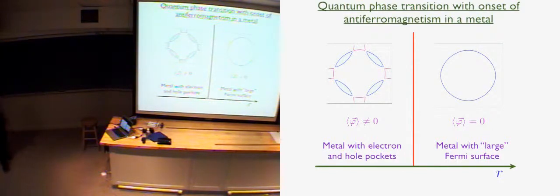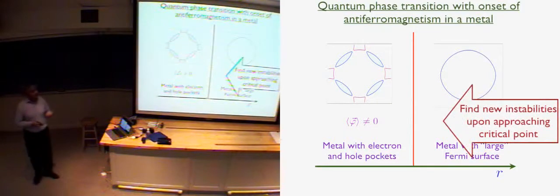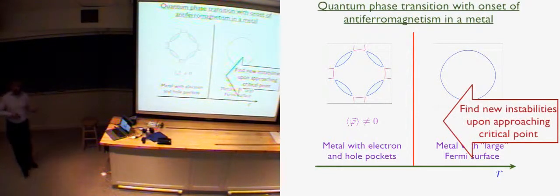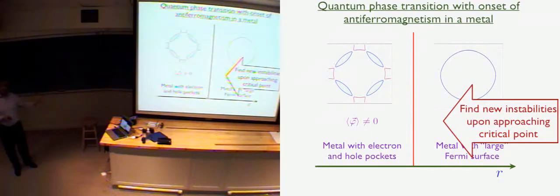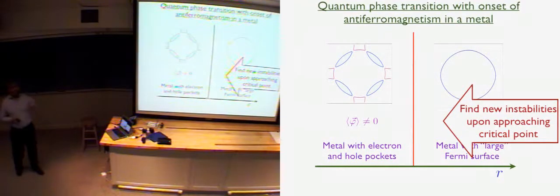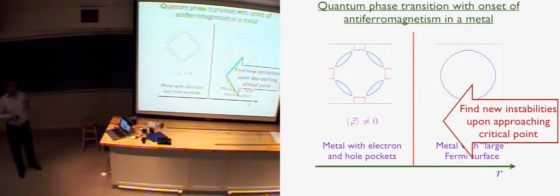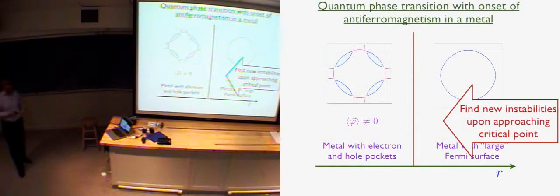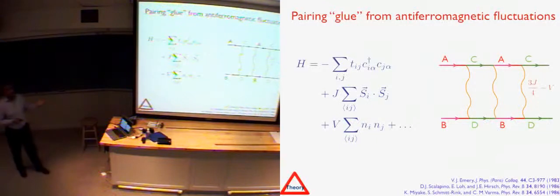So now you have this phase diagram of a quantum phase transition as a function of some parameter between an ordinary metal and an antiferromagnetic metal. We worked very hard to try to understand what happens near this transition point. What we found is that before we actually got to the transition where antiferromagnetism appeared, lots of other things happened. The two strongest things in particular turned out to be D-wave superconductivity and D-wave bond order.